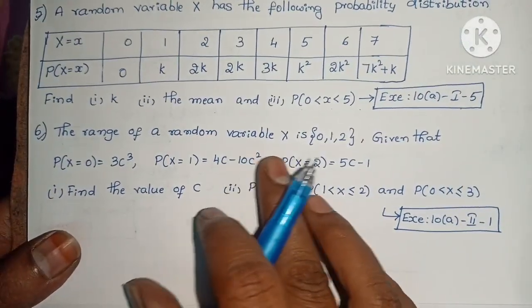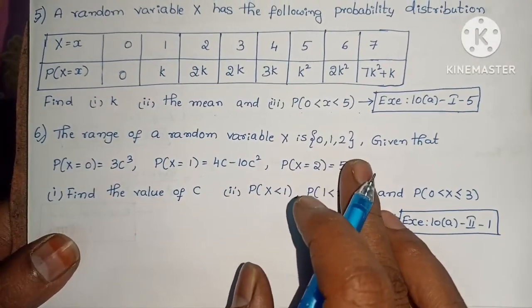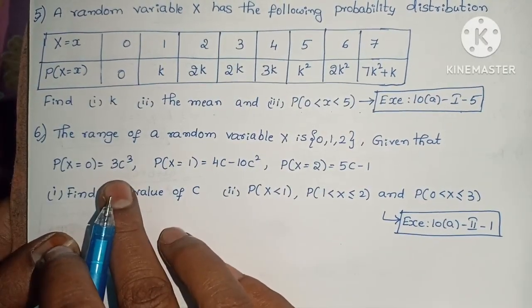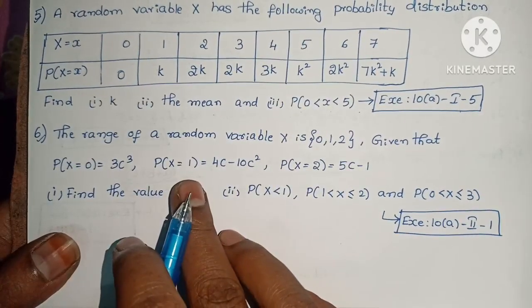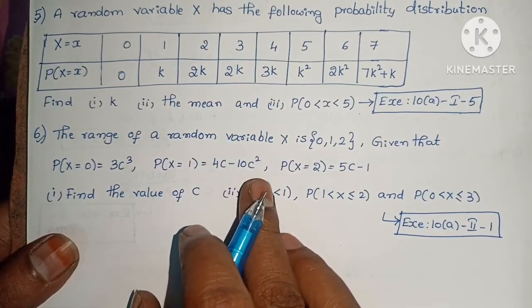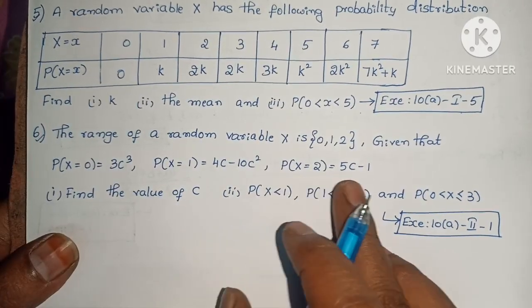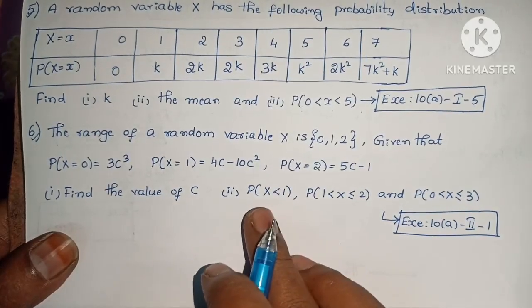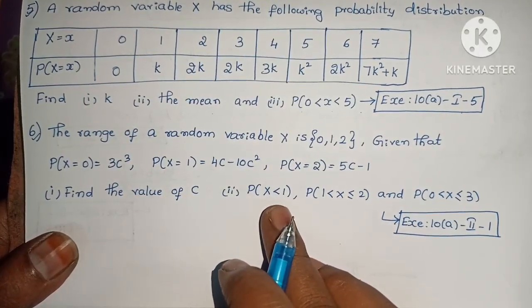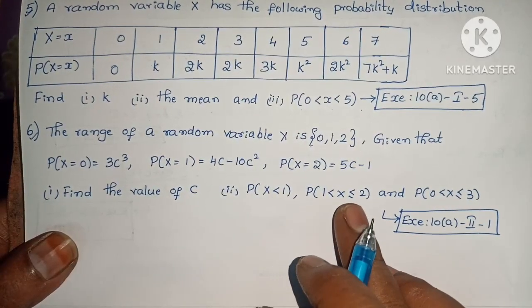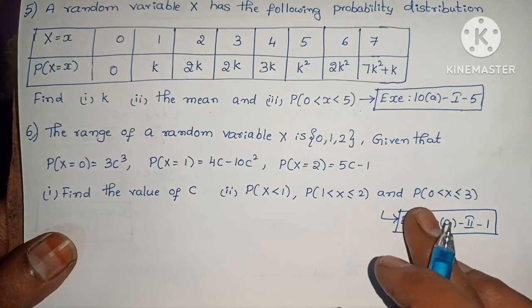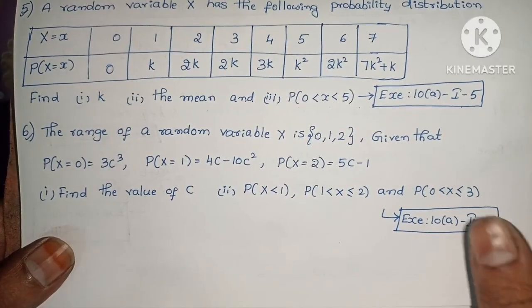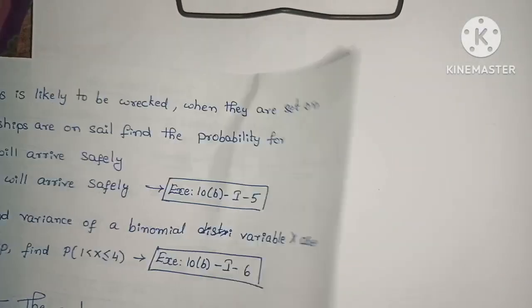The range of a random variable x is 0, 1, 2. Given P(x=0) = 3c³, P(x=1) = 4c − 10c², P(x=2) = 5c − 1. Find the value of c, P(x < 1), P(1 < x ≤ 2), and P(0 < x ≤ 3). Exercise 10, Section II, problem 1.